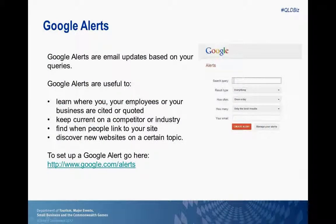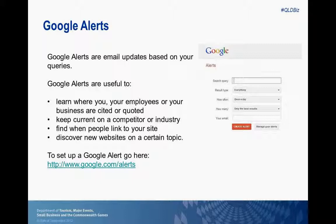Google Alerts are a really useful and popular tool. They are email updates based on your search queries. You can set up a Google Alert at google.com/alerts and type in any search query — your business, your employees, your competitors, your industries — and select to have everything on that topic sent to you, or filter by news, blogs, video, discussion, or books. You can choose to receive alerts as they happen or once a day. I find that 'as they happen' can clog your email inbox quickly, so once a day is usually best, and I tend to go with only the best results to avoid irrelevant content.